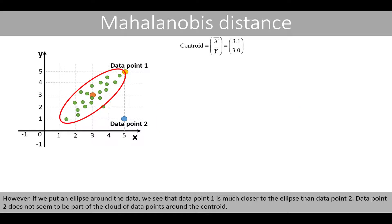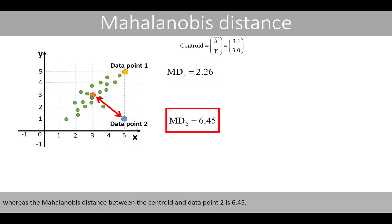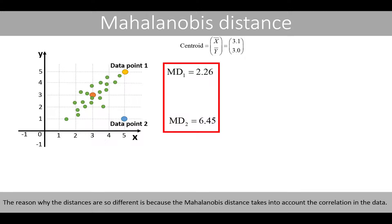However, if we put an ellipse around the data, we see that data point 1 is much closer to the ellipse than data point 2. Data point 2 does not seem to be part of the cloud of data points around the centroid. If we calculate the Mahalanobis distance between data point 1 and the centroid, we get a distance of 2.26, whereas the Mahalanobis distance between the centroid and data point 2 is 6.45. The reason why the distances are so different is because the Mahalanobis distance takes into account the correlation in the data.